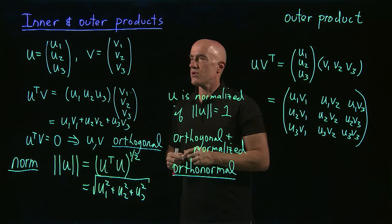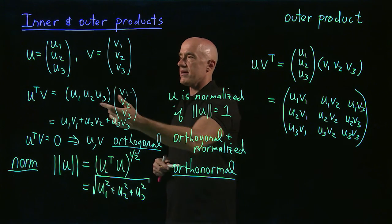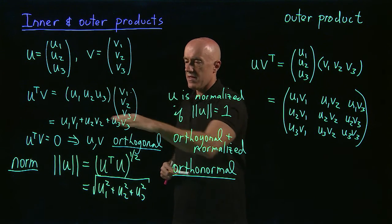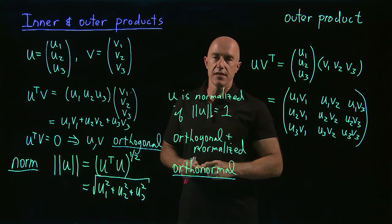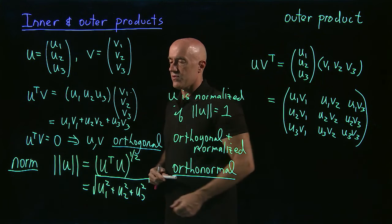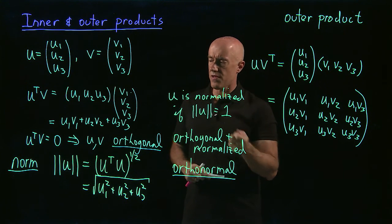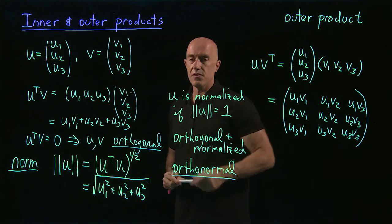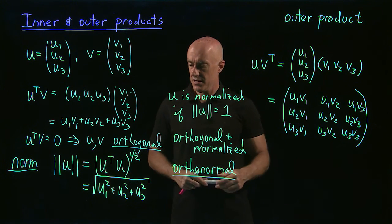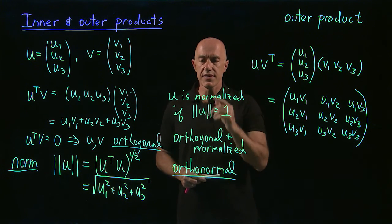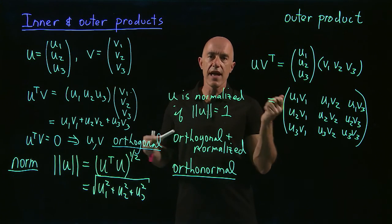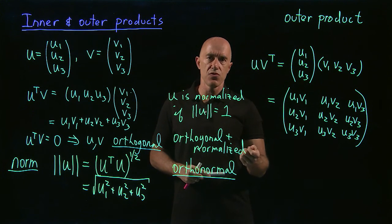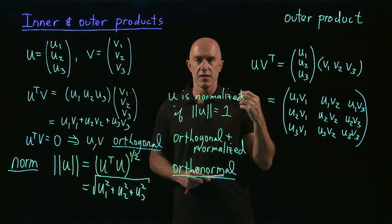So let's recap. We're talking about inner and outer product spaces here. So the inner product between two column matrices is u transpose v. That gives us a scalar. That's equivalent to the dot product in vector calculus. If u transpose v equals zero, then we say the two vectors are orthogonal. The norm of the vector, which is equivalent to the length of the vector, is u transpose u raised to the half power. So square root of the sum of the squares of the components. We say u is normalized if the norm is equal to one. And if we have a set of vectors that are mutually orthogonal and all normalized to a norm of one, then we say the set of vectors is orthonormal.